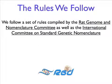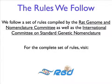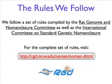The Rat Genome and Nomenclature Committee and the International Committee on Standard Genetic Nomenclature have compiled a set of rules for rat strain nomenclature, and we try to follow these while naming rat strains. A copy of these rules can be accessed from the RGD website at rgd.mcw.edu.